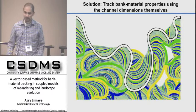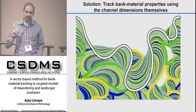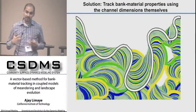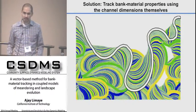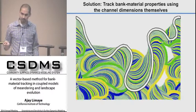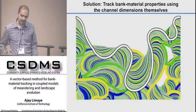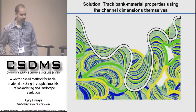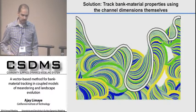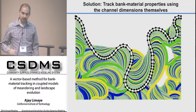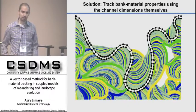To overcome this challenge, we developed a framework that uses the channel geometry instantaneously, records it, and uses that information instead of a grid to keep track of where the channel has been in the landscape. The channel position at different time steps is represented with different colors, and rather than being mapped onto a grid, the footprint is recorded using a connected set of nodes that define the channel boundaries — using far less memory to represent the same information.